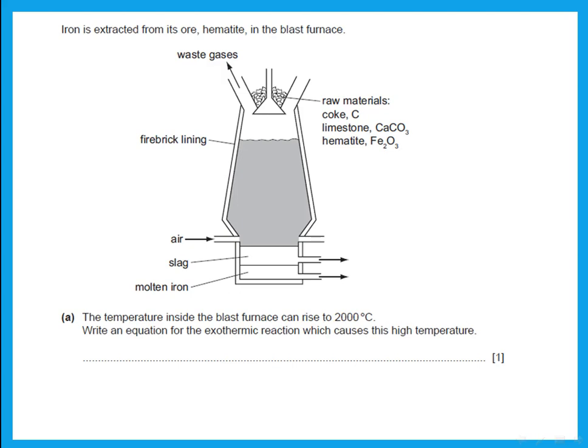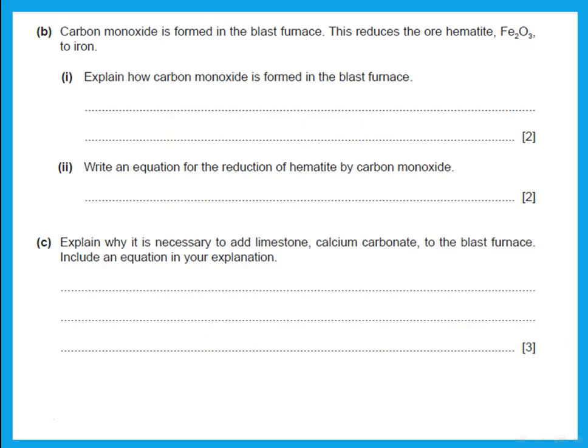Iron is extracted from its ore hematite in the blast furnace. The temperature inside the blast furnace can rise to 2000°C. Write an equation for the exothermic reaction which causes this high temperature. Remember, the equation in the blast furnace that is exothermic and raises the temperature is the burning of coke in oxygen to give carbon dioxide. Carbon monoxide is also formed in the blast furnace — this reduces the ore.